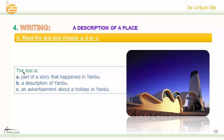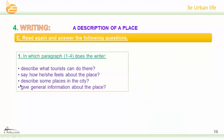Now choose — the text is: A, part of a story that happened in Yanbu; B, a description of Yanbu; C, an advertisement about a holiday in Yanbu. The answer is B — a description of Yanbu. Very good.